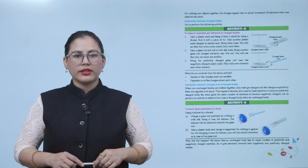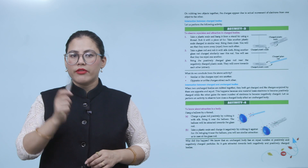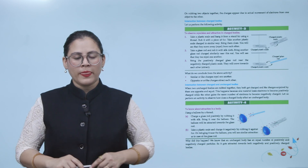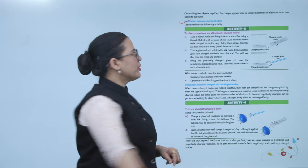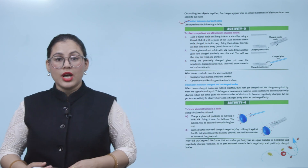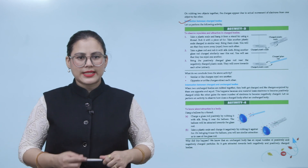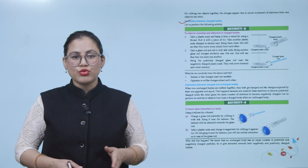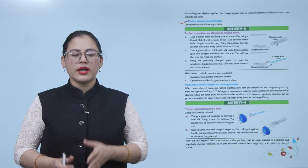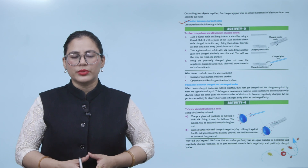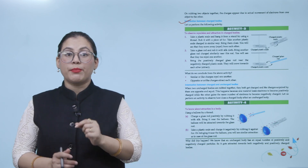On rubbing two objects together, the charge appears due to the actual movement of electrons from one object to the other. Interaction between charged bodies — Activity 3: to observe repulsion and attraction in charged bodies. Take a plastic scale and hang it from a stand using a thread. Rub it with a piece of fur. Take another plastic scale charged in a similar way and bring them close. You will see that they move away from each other — that is, they repel.